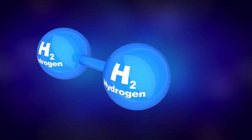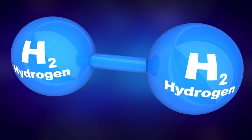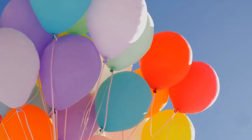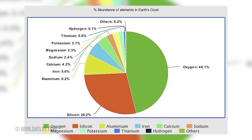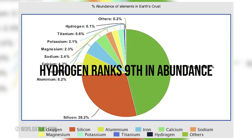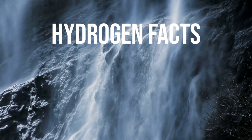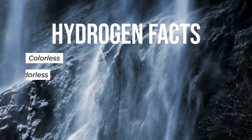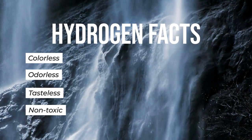Hydrogen is the most abundant element in the universe, three times more abundant than helium. On Earth, hydrogen ranks ninth among the elements in abundance. Another fact about hydrogen is that it is colorless, odorless, tasteless, and non-toxic.